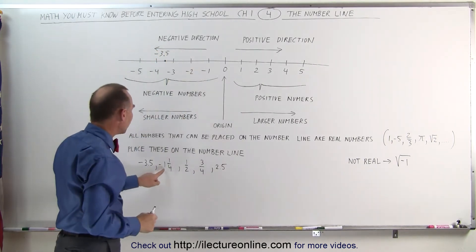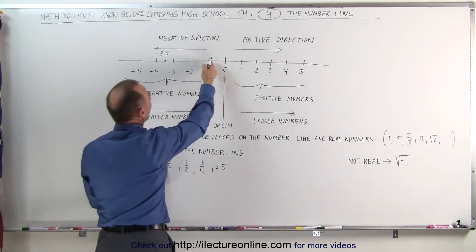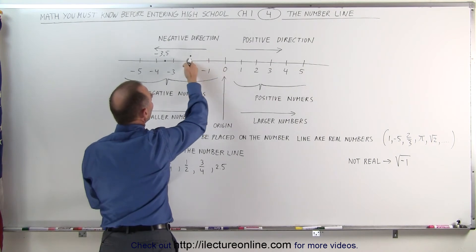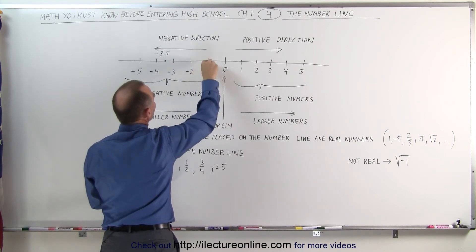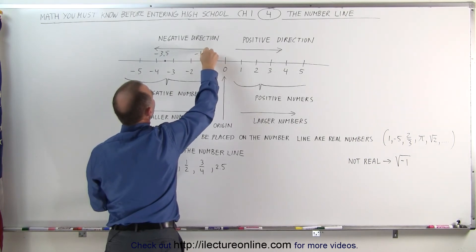The number negative 1 and a quarter, that is 1 and a quarter to the left of 1. If this is 1, this is to 1 quarter the distance from negative 1 to negative 2, that places it right about there. This is the number minus 1 and a quarter.